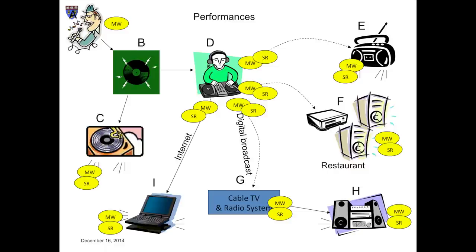Why differentiate the performance of the musical work and the performances of the sound recording? Because the copyrights in these things may well be held by different parties, and because they're governed by different rules. That's step one of the analysis. Having identified all of the performances, the next step is to determine which of them are public. If they're not public, we don't have to worry about them anymore. If they are, we'll have to proceed to step three.